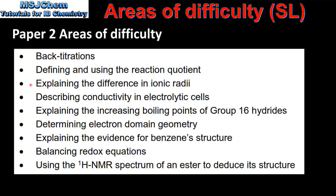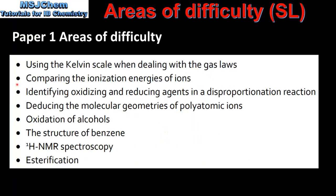Next we have explaining the difference in ionic radii. Positive ions are smaller than their parent atoms because positive ions usually have one less occupied energy level and fewer electrons than their parent atoms. Negative ions are bigger than their parent atoms because they have more electrons than their parent atoms.